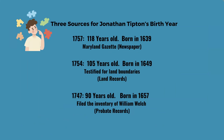A good genealogist looks for more than one source. The Maryland Gazette reports he was 118 years old, making his birth 1639. But in a 1754 land record, he stated he was 105 years old — birth year 1649. And in 1747, he stated he was 90 years old when he filed the inventory of William Welch — making his birth year about 1657. Going back to when the English took over Jamaica in 1655, only the 1657 estimate could possibly be within the realm of time. We probably shouldn't expect Jonathan Tipton to have known the exact year he was born.